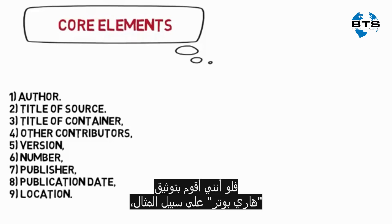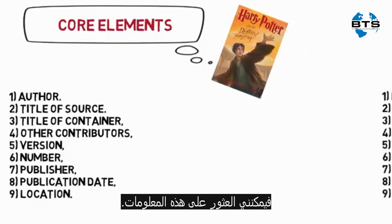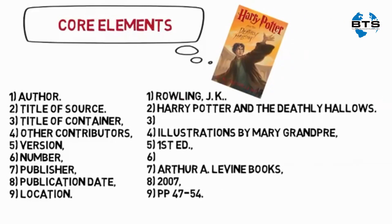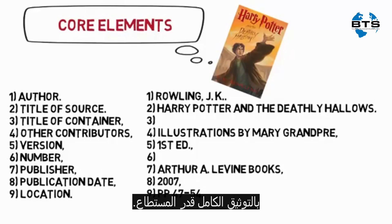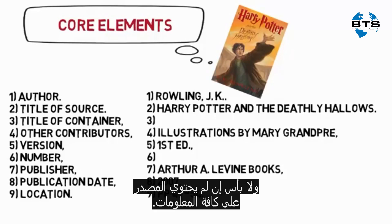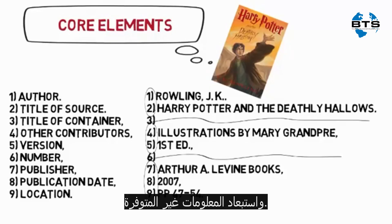For example, if I am referencing Harry Potter and the Deathly Hallows, I can find the following core elements. Different kinds of sources contain different kinds of information. The goal of MLA citations is to provide the reader with the most complete citation possible. It is okay if your source does not contain all of the core elements. The new edition of the MLA makes it easy to include the information that is available and exclude the information that is not.